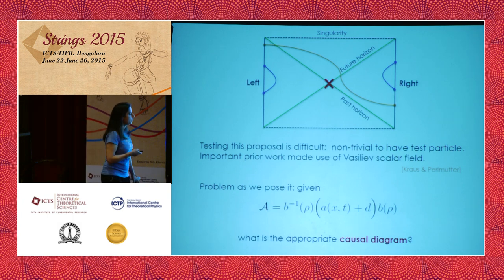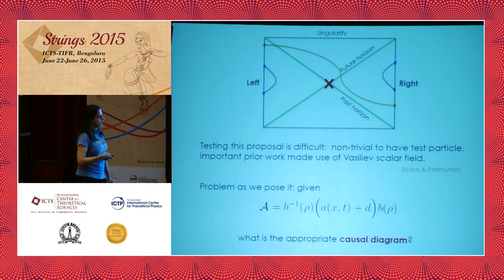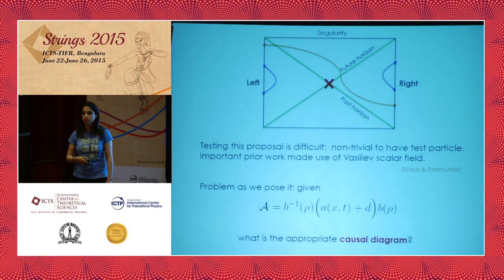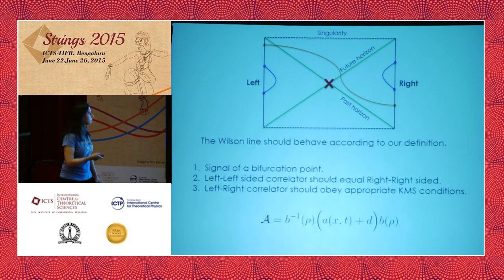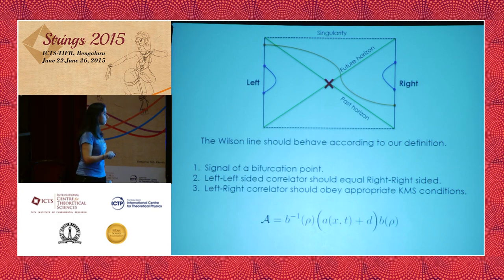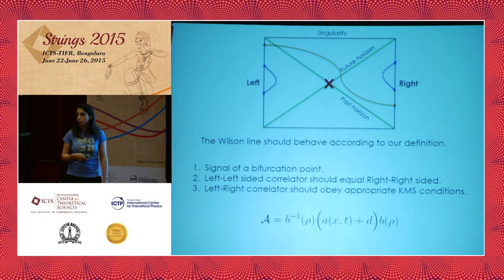When we write down connections, they're usually decomposed so that the radial dependence is separated from the boundary coordinate dependence. The question is: if I give you this connection, what would be the causal diagram associated to it? The set of conditions we're going to impose are: we want to see a signal of a bifurcation point as we evaluate the Wilson line; we want to impose a condition such that we have a thermal field double interpretation — meaning left-left correlators equal right-right correlators; and most constrainingly, as I go from left to right, I have to obey the appropriate KMS conditions.